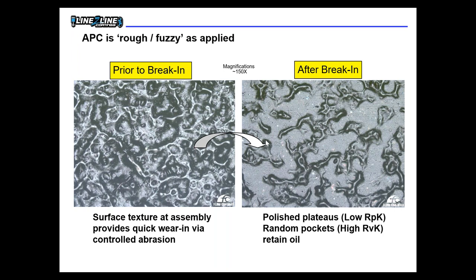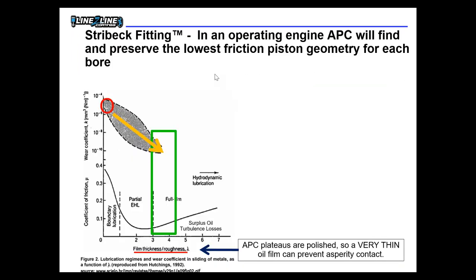When you install this on a piston and start running it up and down, those little mountains get knocked off and you get polished plateaus. Randomly spaced around the plateau surface are pockets to hold oil — notice those pockets aren't connected, they're random and individual. The oil gets stuck in each one, unlike a normal piston where machining marks can provide a leak path for the oil to get out of the loaded area. When you install it in an engine and start operating, it will find its fit for each cylinder bore — each piston finds the fit that that bore wants. We call that Strybeck fitting.